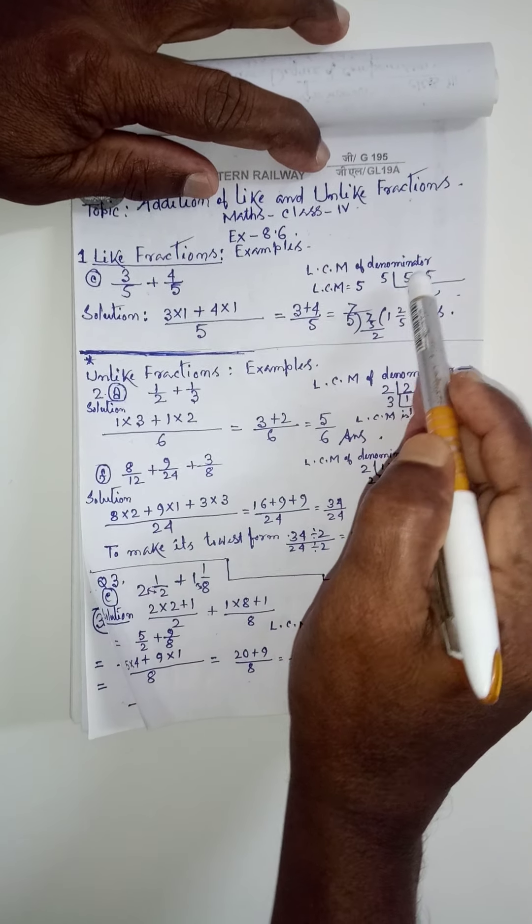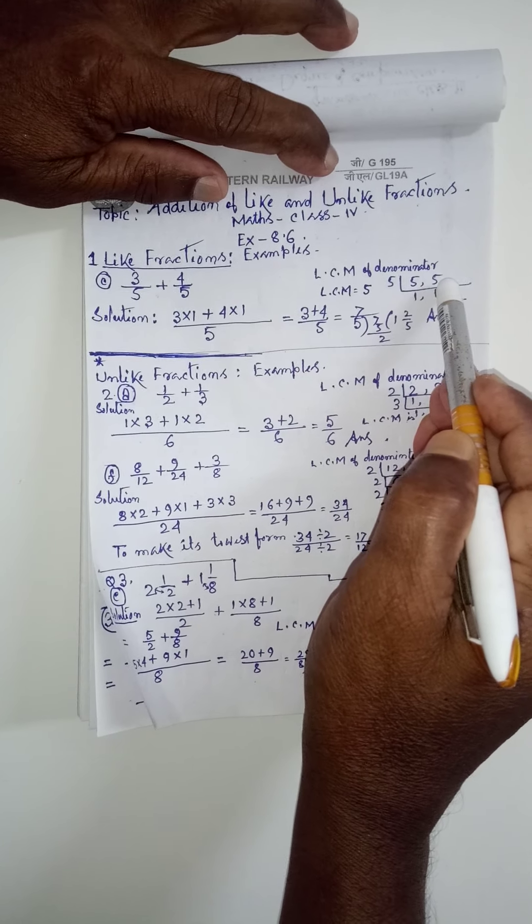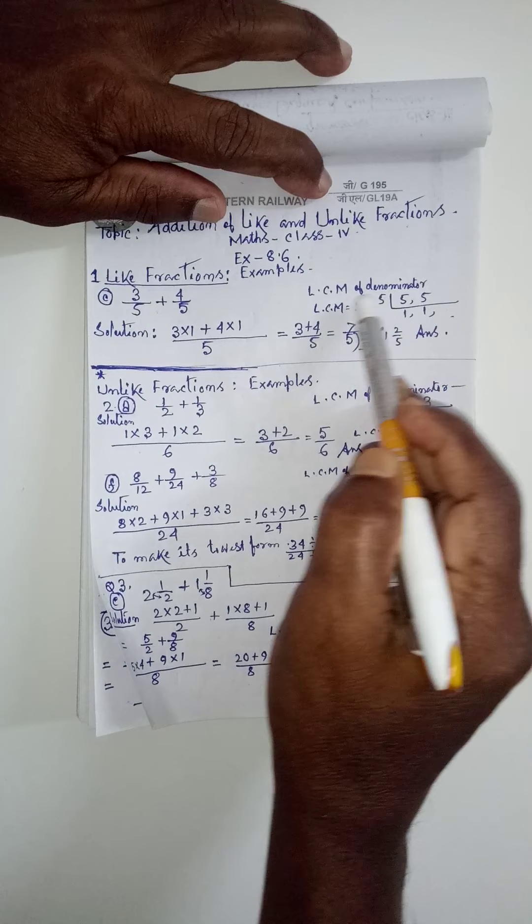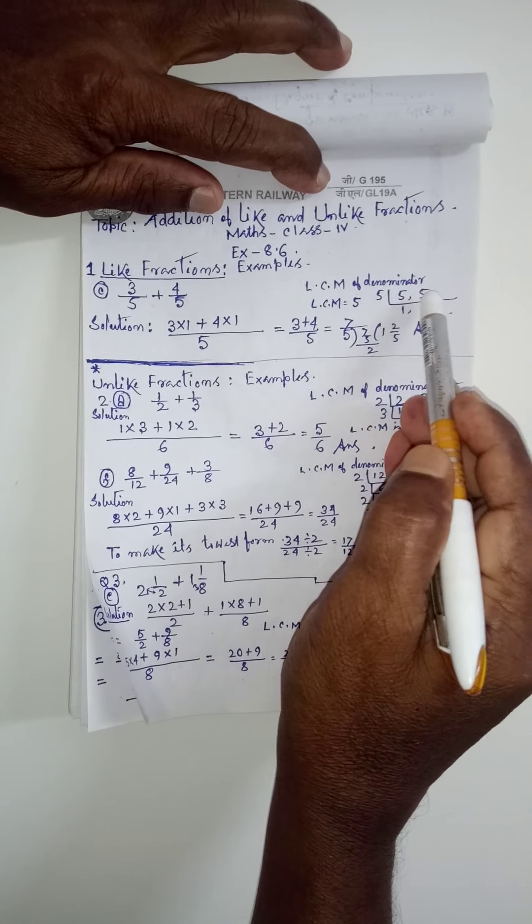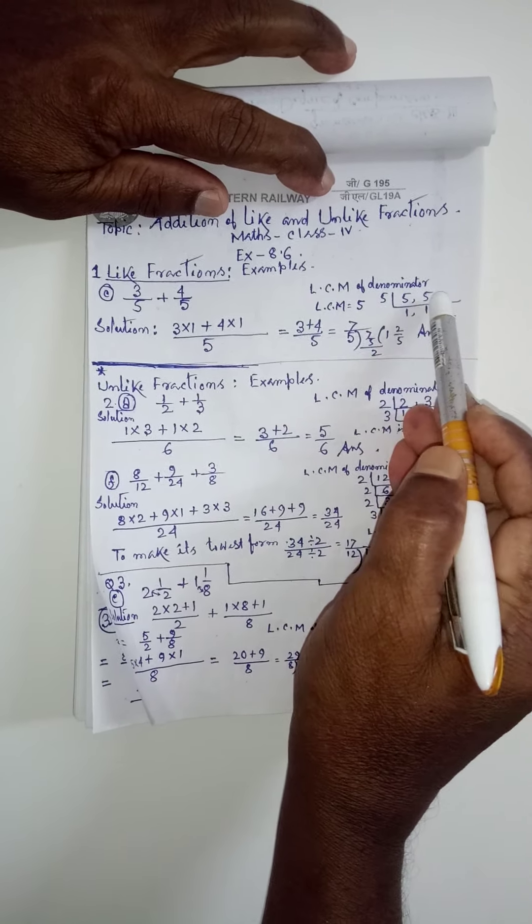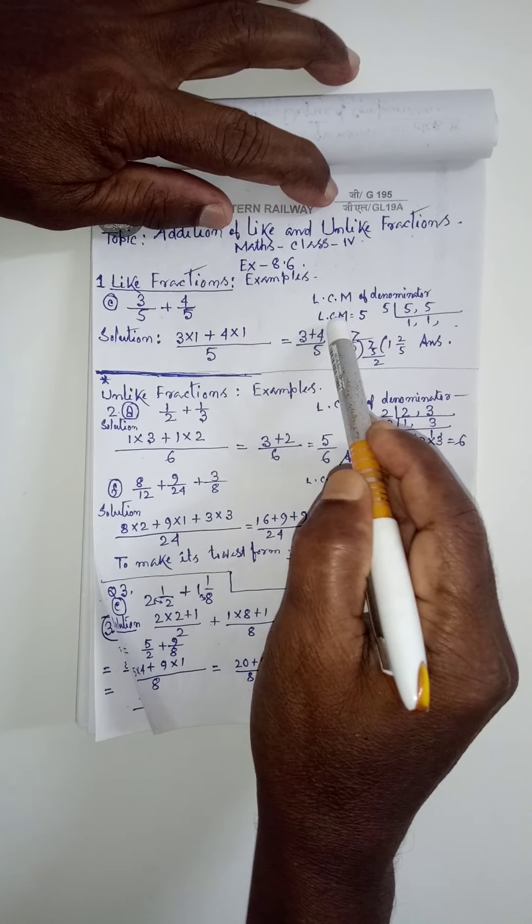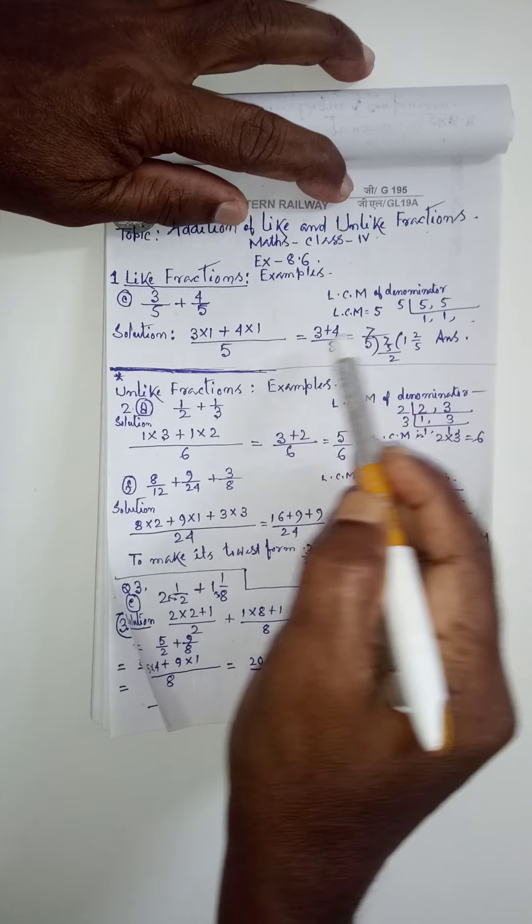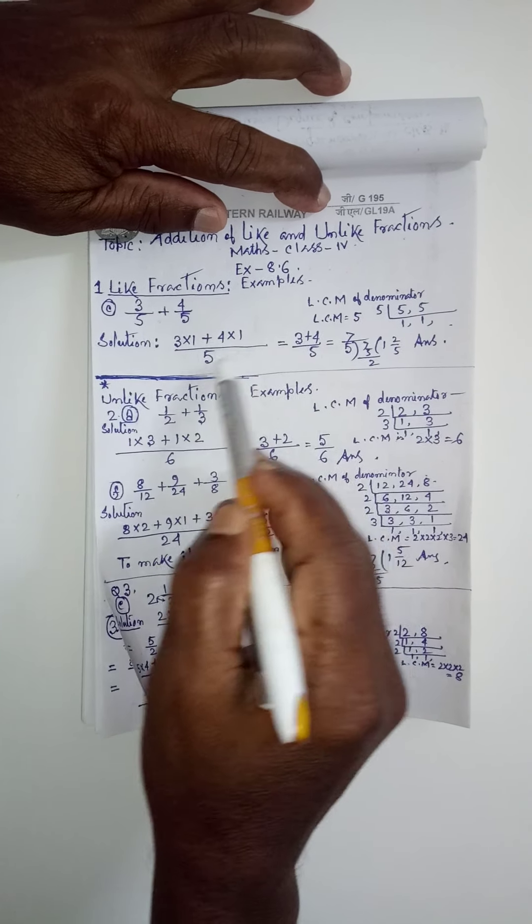3 by 5 and 4 by 5. Denominators are 5, 5. First of all, we have to find out the LCM of the denominator. To do that, we have written here 5, 5.